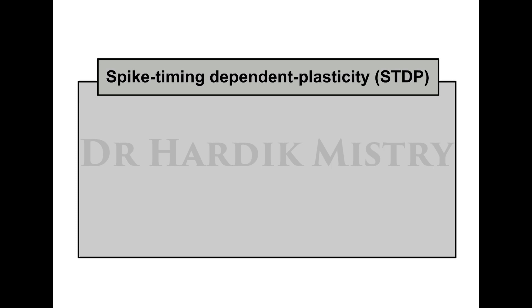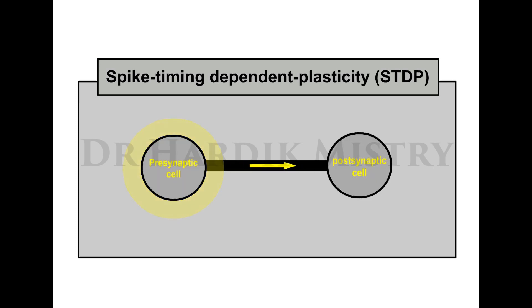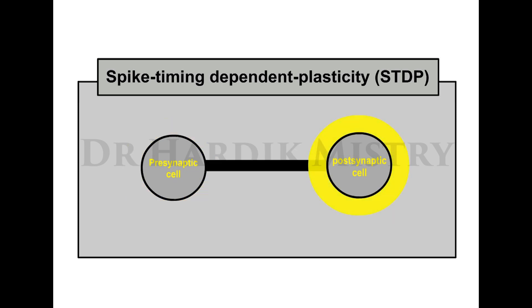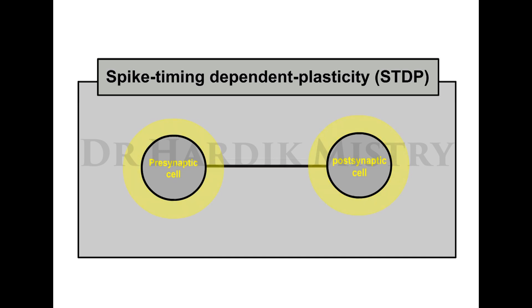Spike timing-dependent plasticity: if the pre-synaptic cell fires repeatedly before the post-synaptic cell, it is likely that firing of the pre-synaptic cell contributes to the post-synaptic cell firing, and the synapse between the two cells should be strengthened. If the pre-synaptic cell fires repeatedly after the post-synaptic cell, it is unlikely to have contributed to causing the firing, and the synapse should be weakened.